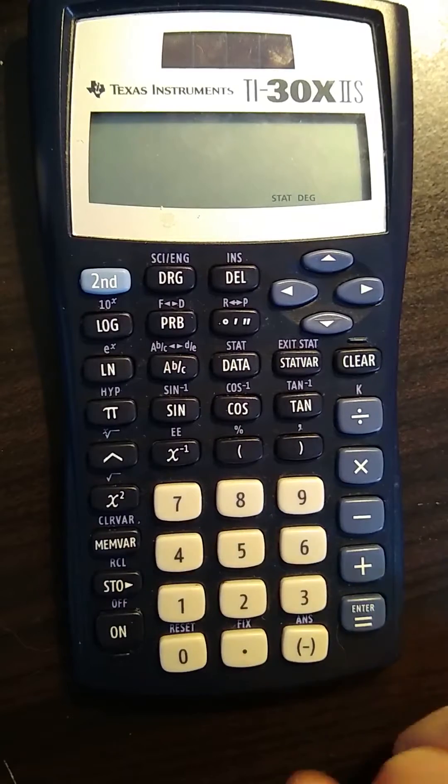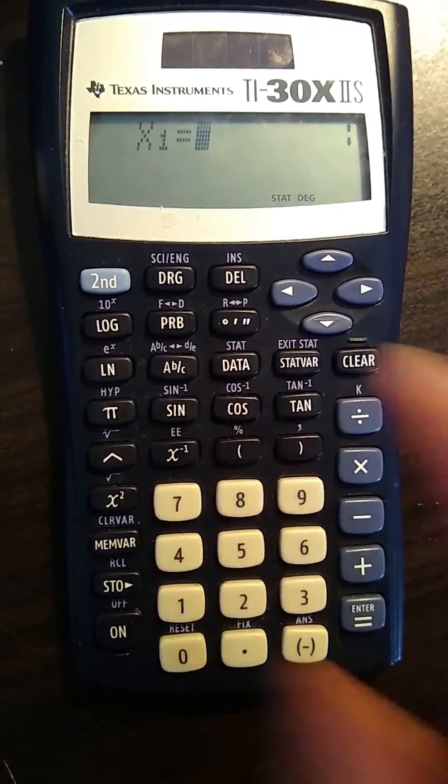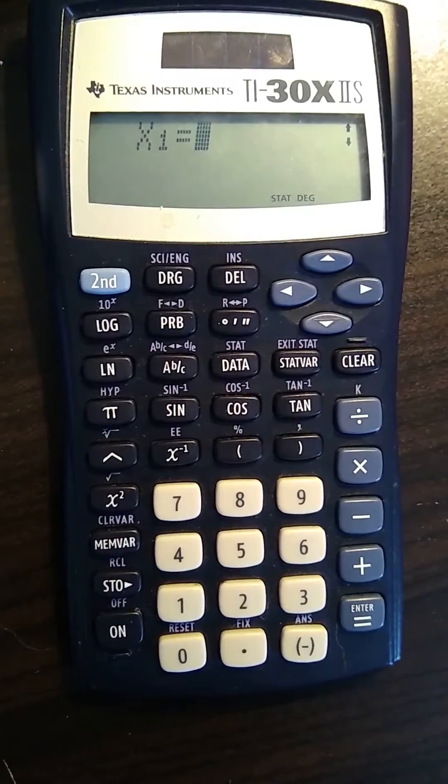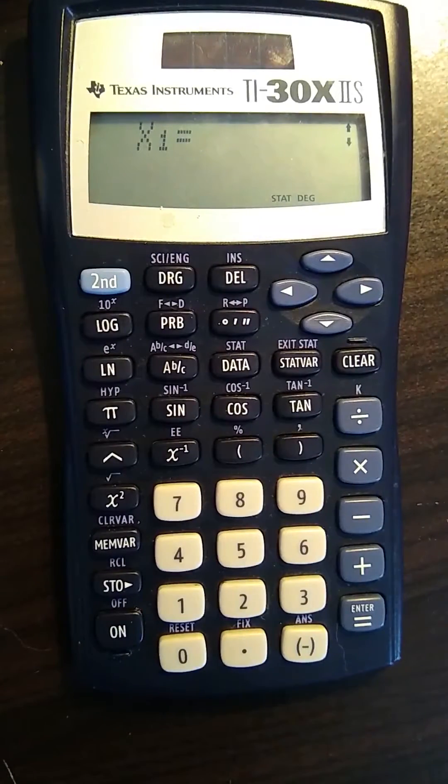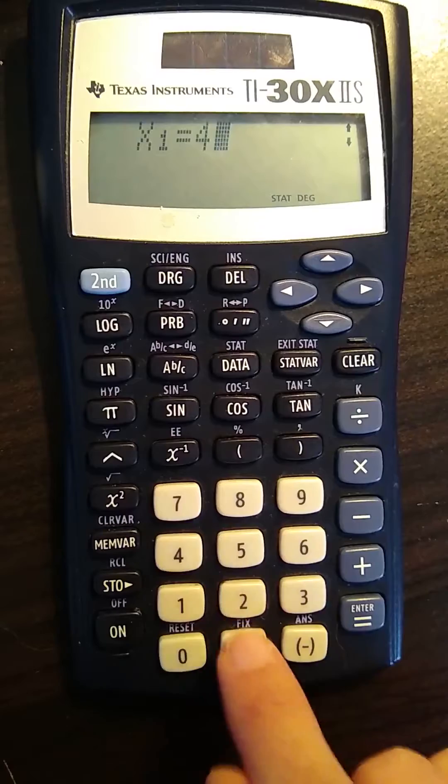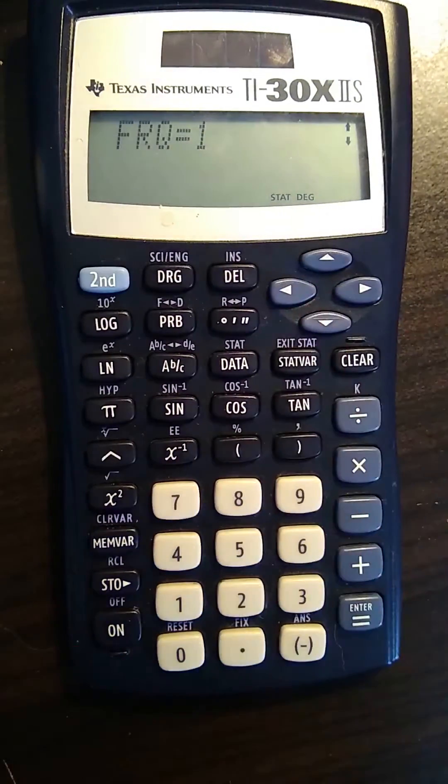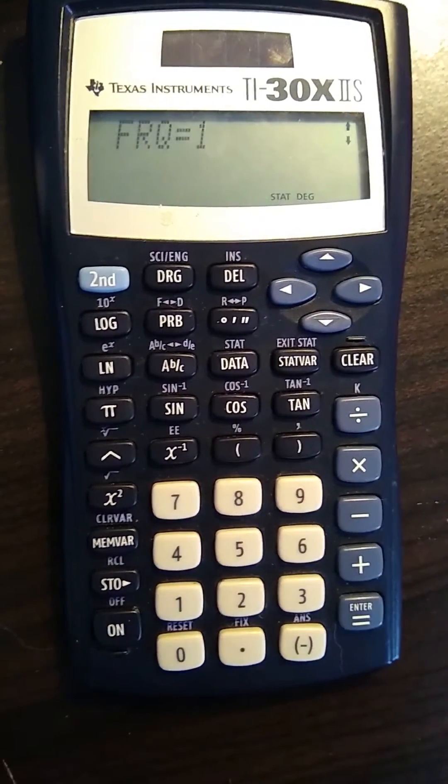So we can enter some data. We'll press data and it's going to have x1, so that's our first value that we're going to put in. We're just going to look at a few values. Let's put in 4.32 and push the down arrow. You could also push enter.